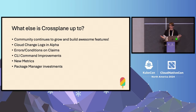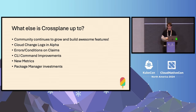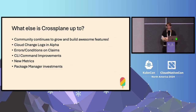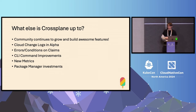You may be asking, what else is Crossplane up to? The Crossplane community is really continuing to grow and build awesome features. One feature that went into alpha recently is Cloud Change Logs, which will allow you to have an audit trail of every interaction that Crossplane is making with your cloud provider or source control management tool. You can also now bubble up errors and conditions on claims, which is really helpful for developers to start seeing errors at the top level. There have also been CLI command improvements to make interacting with Crossplane easier.